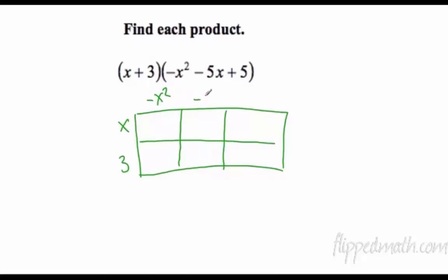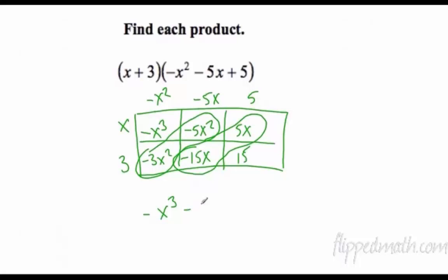Plus 5. x times negative x squared is negative x to the third, x times negative 5x is negative 5x squared, x times 5 is 5x. Up here we have 3 times negative x squared is negative 3x squared, 3 times negative 5x is negative 15x, and 3 times 5 is 15. Like terms are generally right here diagonal, so I have negative x to the third, negative 3x squared minus 5x squared is negative 8x squared, negative 15x and 5x is negative 10x plus 15.